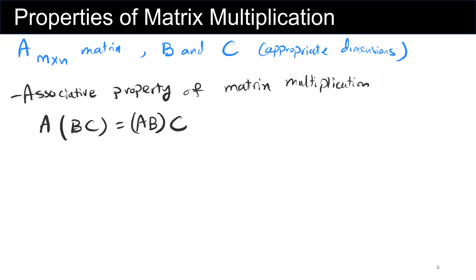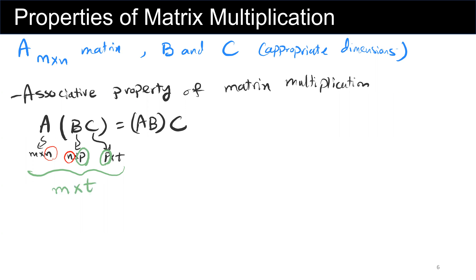Let's discuss dimensions for the associative property. If matrix A is n by m, then matrix B should be m by p so that the number of columns in A equals the number of rows in B. Matrix C should then be p by t, since the number of columns in B must equal the number of rows in C, giving an outer result of n by t.